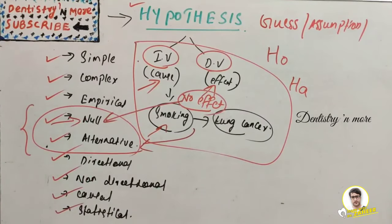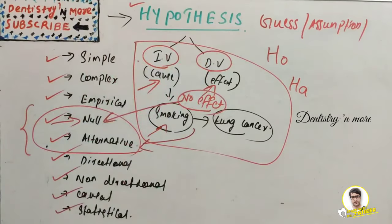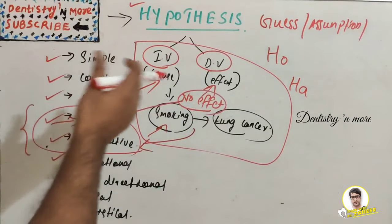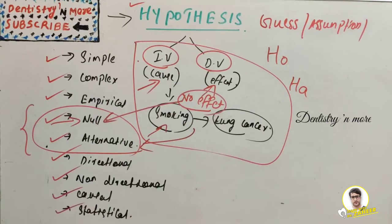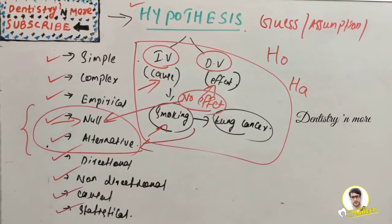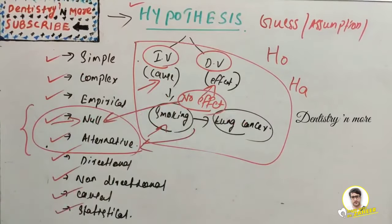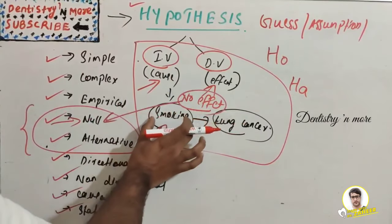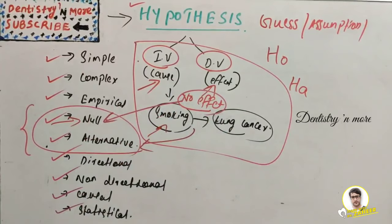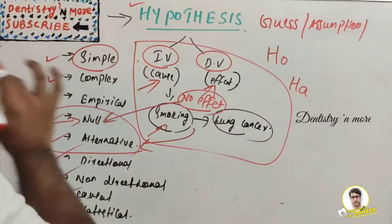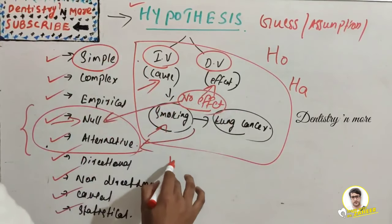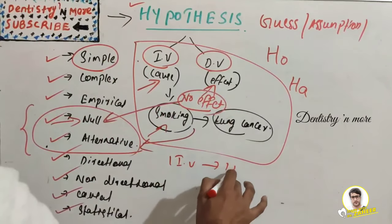Now let's move to simple hypothesis. Simple hypothesis states that there exists a relationship between two variables — one independent and one dependent. The independent variable causes the dependent variable. The simplest example: smoking causes lung cancer. There is just one independent variable (smoking) and one dependent variable (lung cancer).